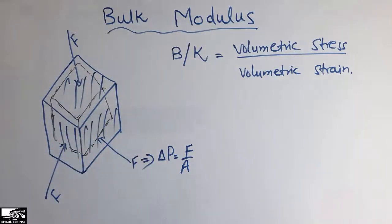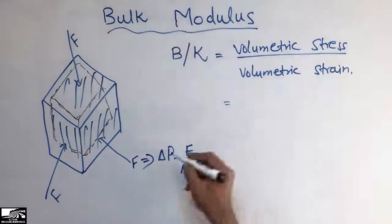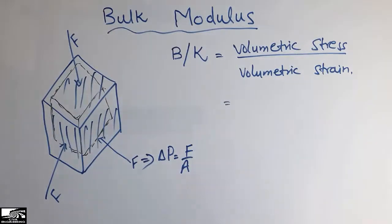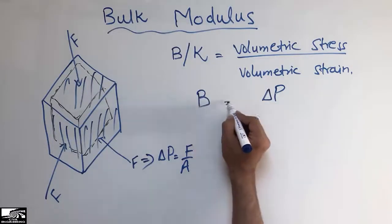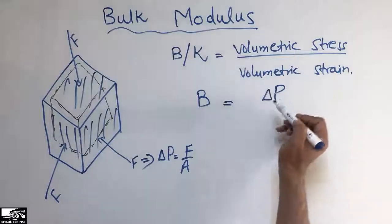We can call it that there is a stress acting on this object, so it will be the volumetric stress. I can write this as delta P in the bulk modulus formula. Delta P is the volumetric stress.